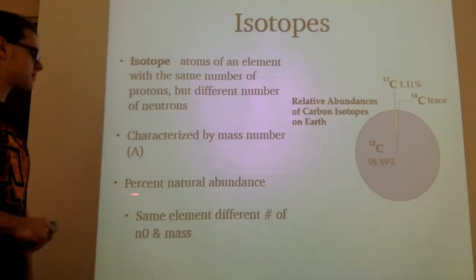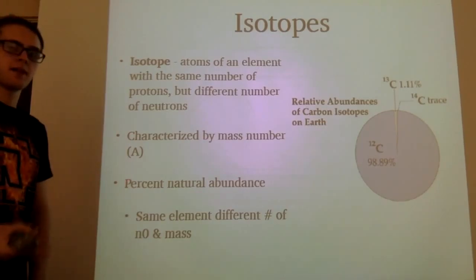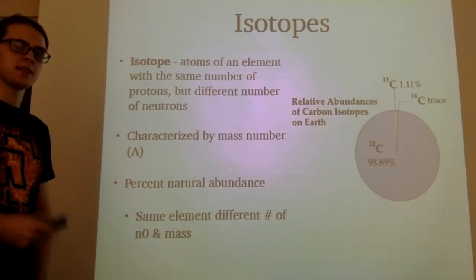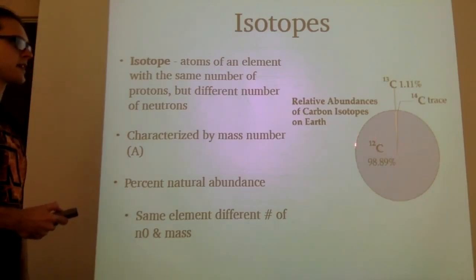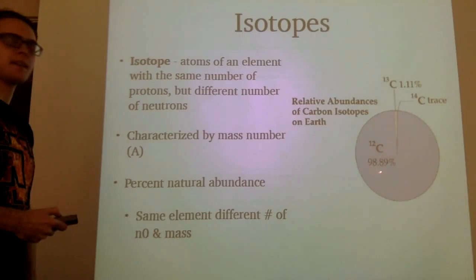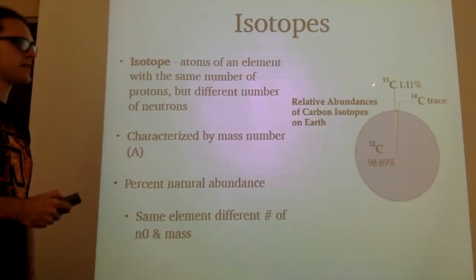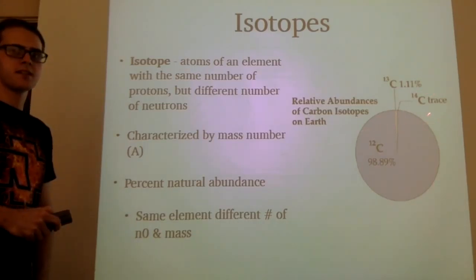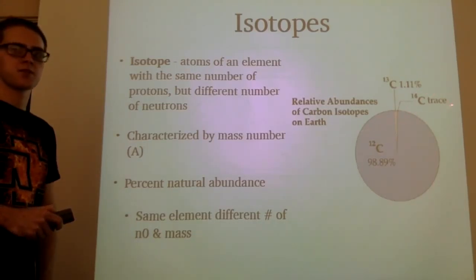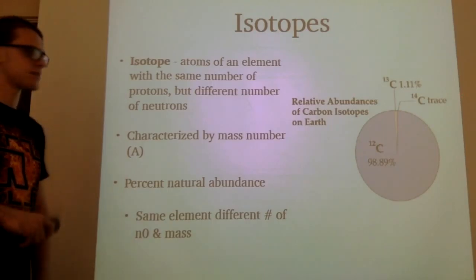Chemists use the percent natural abundance, which is the amount of each isotope found in nature. If we look over here, we can see that carbon-12 appears in 98.9% in nature, carbon-13 only shows in 1.1%, and carbon-14 shows in very small amounts, trace amounts, not even to be noticed for the most part.